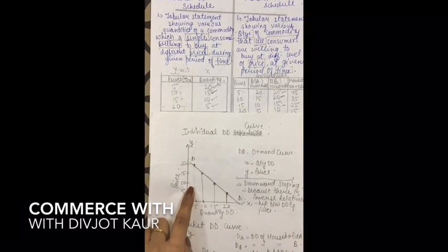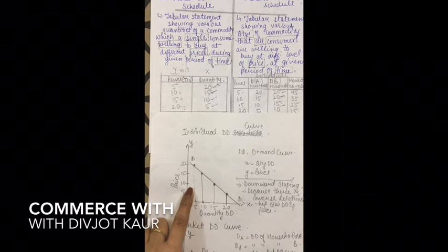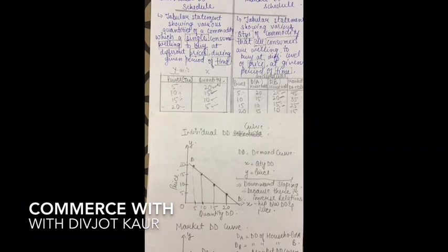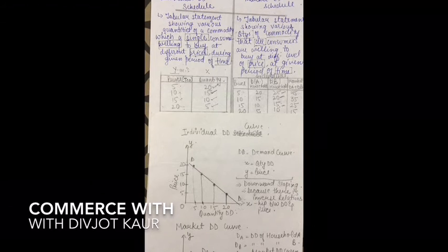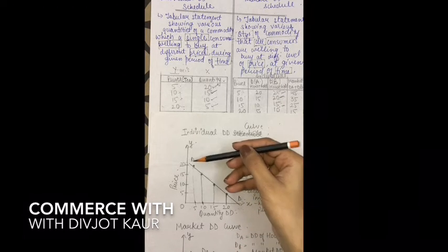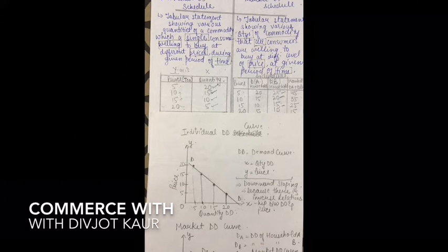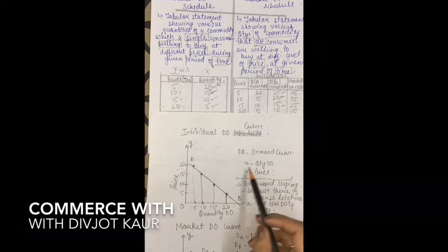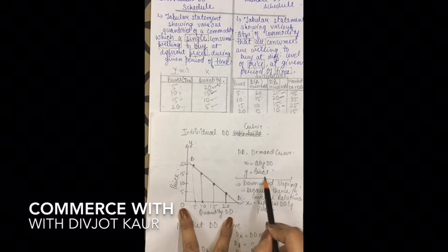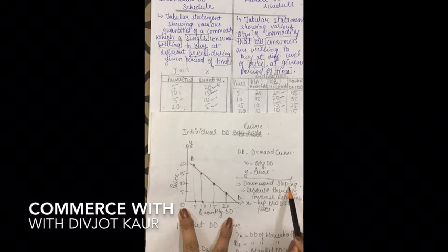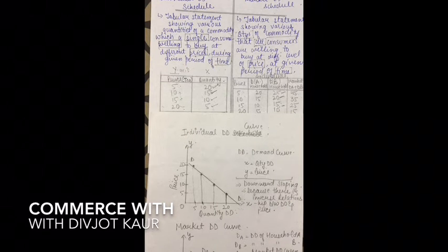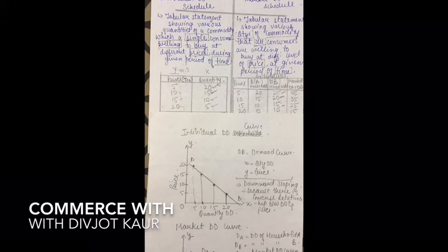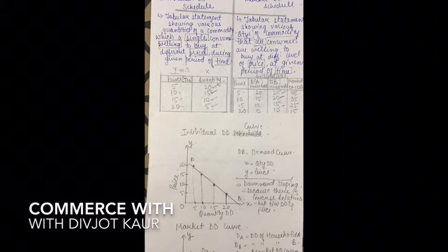The properties of demand curve: demand curve is downward sloping. DD means demand curve. On X-axis I show quantity demanded and on Y-axis I show price. The demand curve is downward sloping because there is an inverse relationship between demand and price — when price increases, demand decreases. This inverse relationship is why the curve slopes downward.